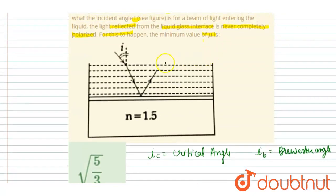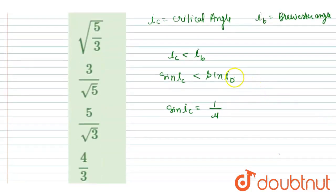And the lesser denser medium is having a refractive index of one, that is air. And if I talk about sine i_b, right, then we know that tan of i_b is 1.5 by mu, right? That is 3 by 2 mu.